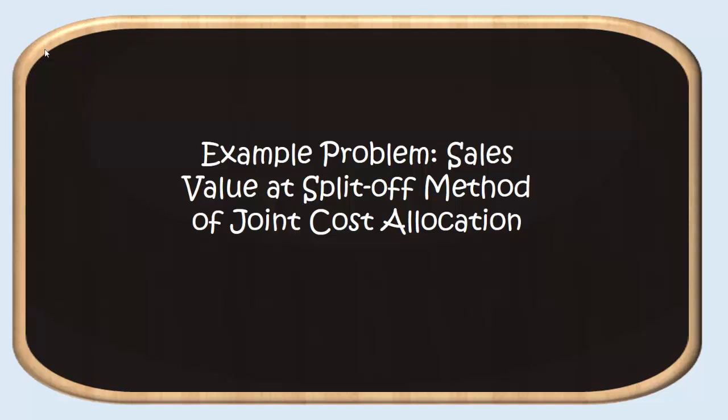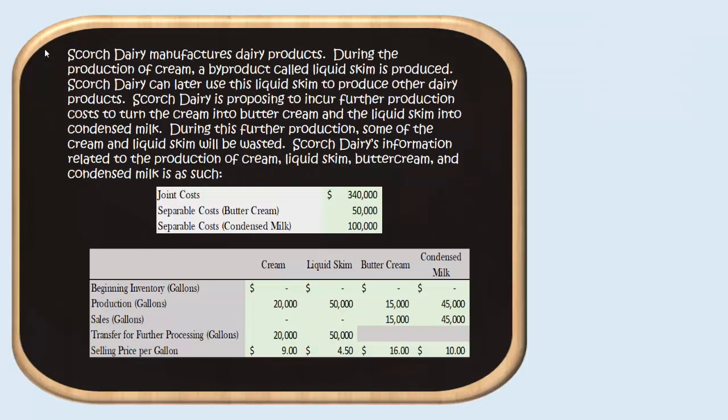In this example, we're going to use the sales value at split-off method to allocate joint costs to different products. Our company is Scorch Dairy, and they manufacture a variety of dairy products. One particular product they make is cream, and during the production of cream, a byproduct called liquid skim is produced. These products incur a joint cost because we can't make cream without making the byproduct liquid skim — it comes from the same production process, so the cost to make cream is also inclusive of the cost to make liquid skim.